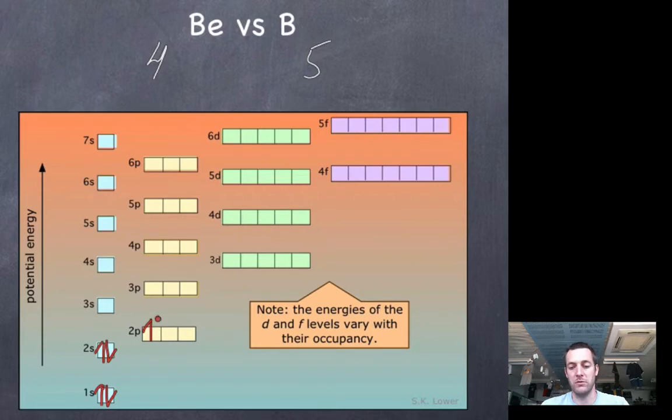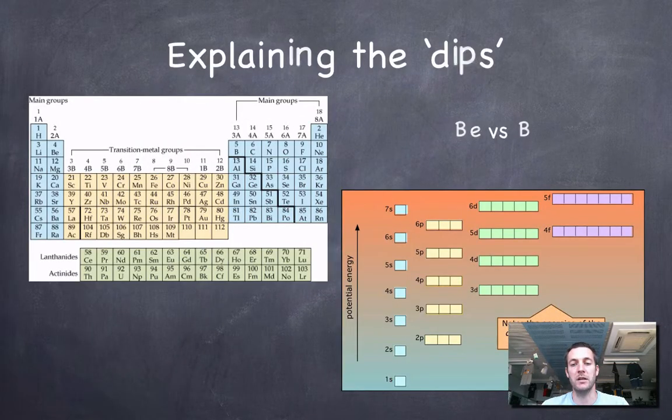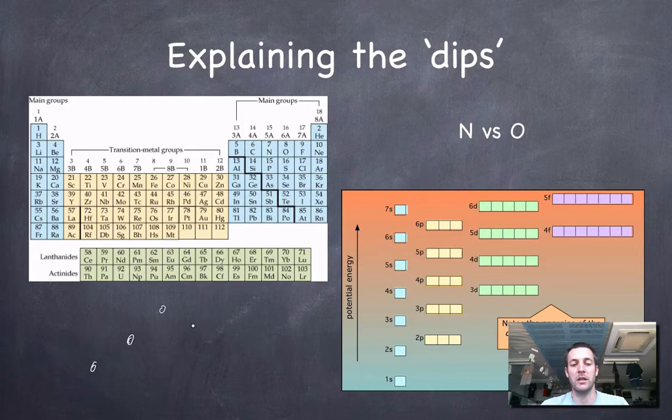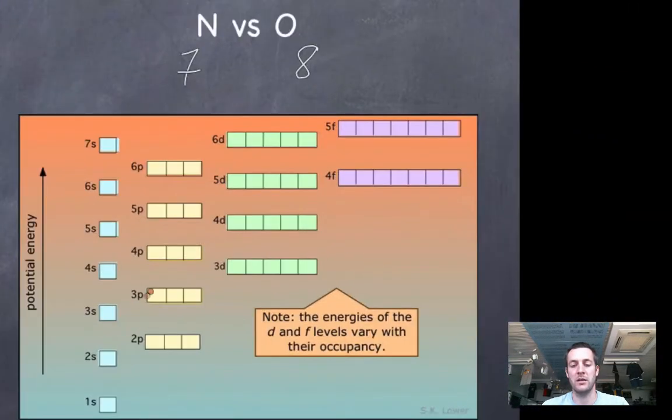Similarly, we saw a dip between nitrogen and oxygen. We went from boron to carbon to nitrogen and then there was a dip and we got to oxygen. Let's explain that one if we can. Well, nitrogen has seven electrons, oxygen has eight. Let's put seven electrons in here. Four, then we'll put the next three into different orbitals within the p subshell because we're going to avoid spin pairing. We can do that because they've all got the same energy.